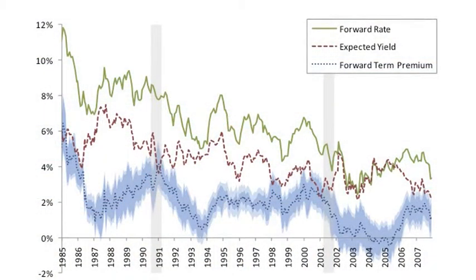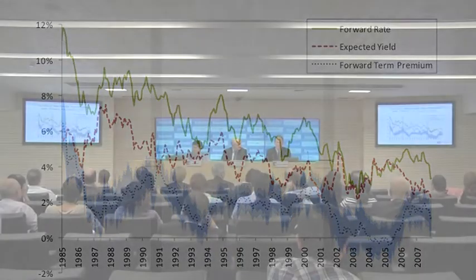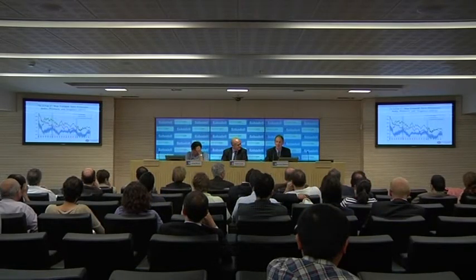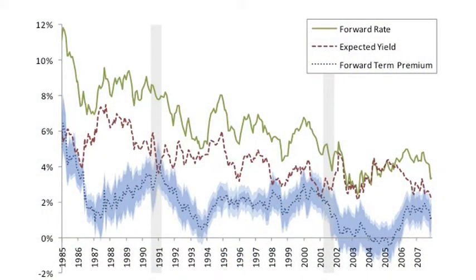This is the term premium in forward rates for the U.S. Treasury market. It's simply the difference between the rate or interest you would contract on today for a one-year loan that starts in two years — the in-two-years-for-one-year loan contracted today at the forward rate — minus the expected future one-year rate that comes from an economic model. The green line in this slide is the actual forward rate, and the red dotted line is the expected one-year future rate that comes from a model.